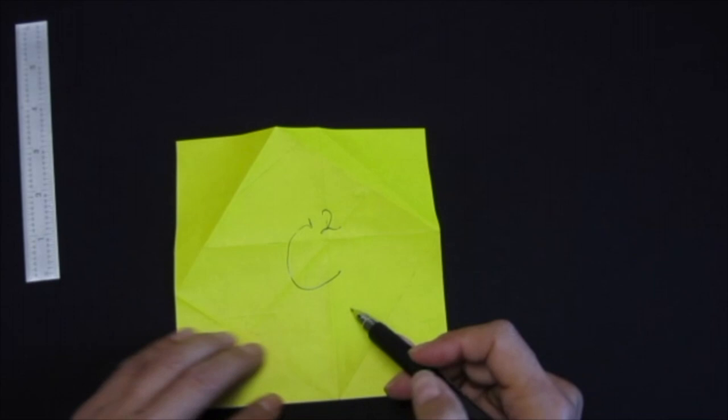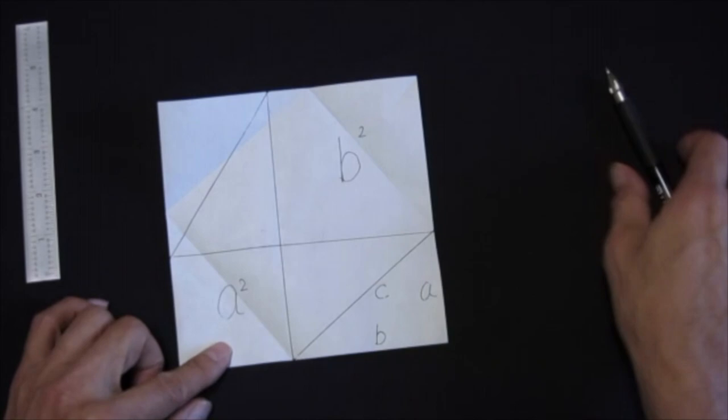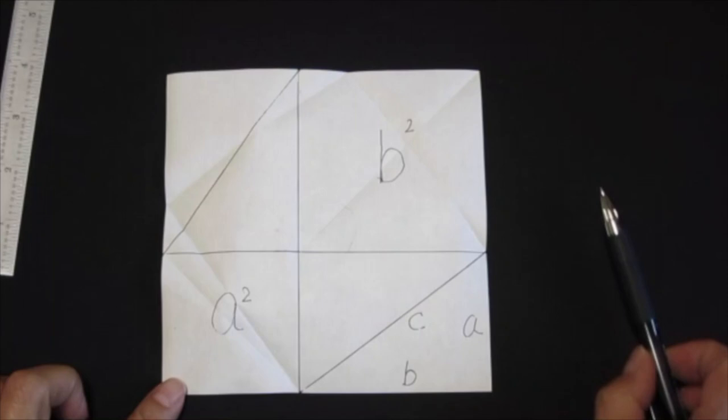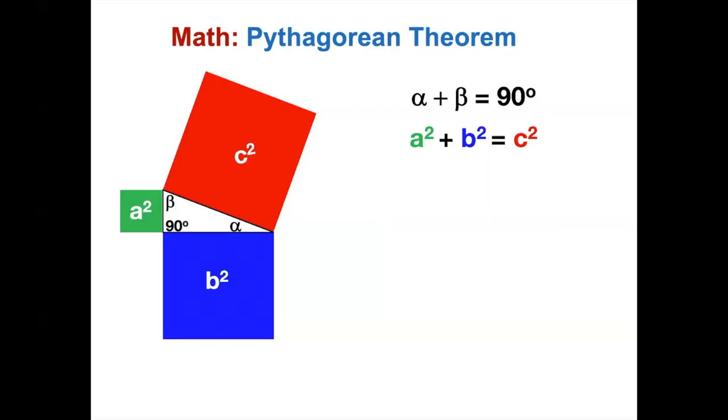Subtract the four triangles. This side remains one big C square. Flip over. We have two small squares, A square and B square, and the four same size triangles. Subtract the four triangles. It remains two little squares. They are same as the big square C. The origami demonstrated this relation, which is called the Pythagorean theorem.